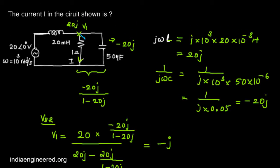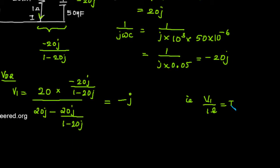Now we have found out the voltage here, that is -j, and what will be the current through 1 ohm? That will be V1 by 1 ohm, that is I. Now what is V1? That is -j by 1. That is I equal to -j amperes.